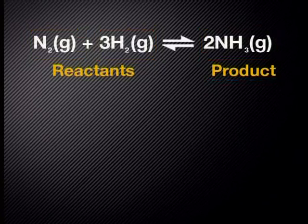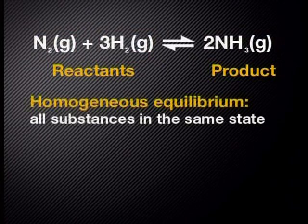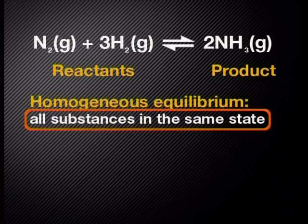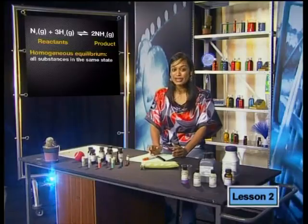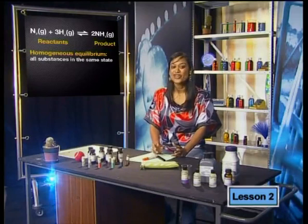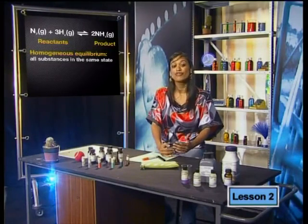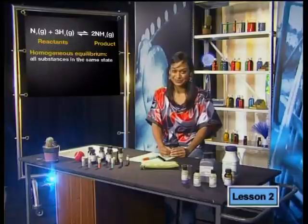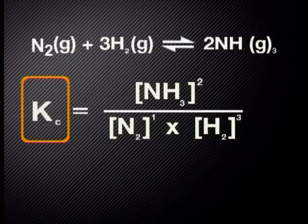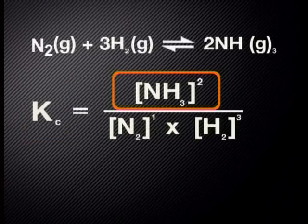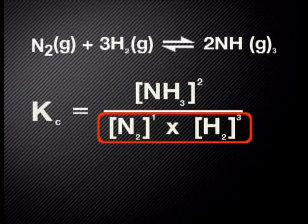The reactants and products are all gases. This means that this is a homogeneous chemical equilibrium because all the substances are in the same state. The expression for Kc is the concentration of products multiplied together over the concentration of reactants multiplied together. Therefore, Kc equals the concentration of ammonia to the power of 2, over the concentration of nitrogen to the power of 1, times the concentration of hydrogen to the power of 3.